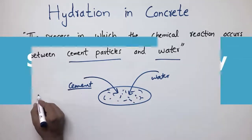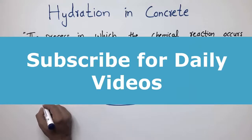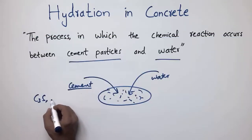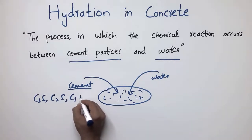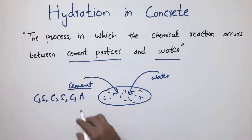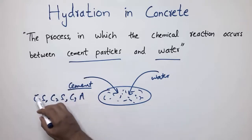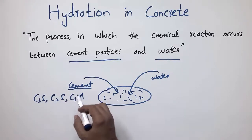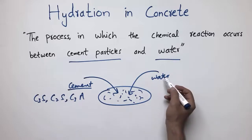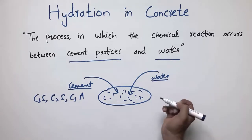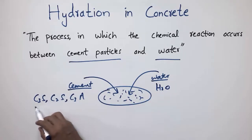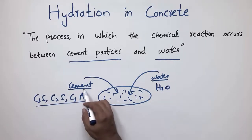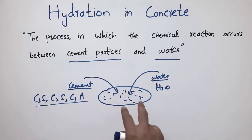The reaction occurring in the concrete is because of the cementitious particles, which are mainly C3S (tricalcium silicate), C2S (dicalcium silicate), and C3A (tricalcium aluminate). These are the main components in cement which are responsible for the hydration reaction. The water particles are the H2O molecules which react with these three different constituents of the cement.